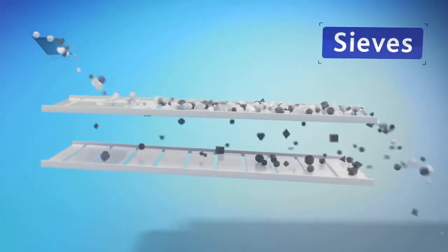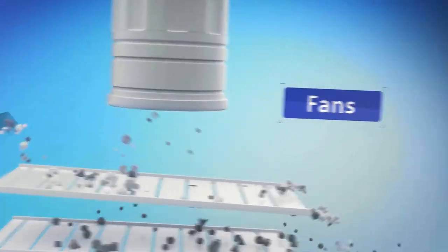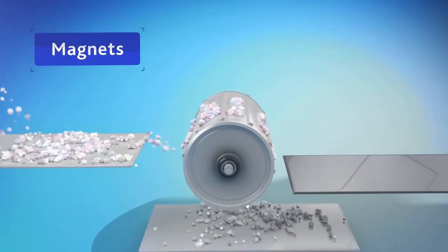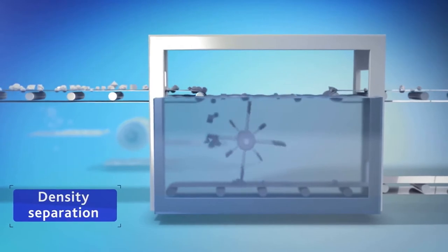Using large sieves, fans, magnets and water baths, light and heavy fractions are separated and plastics are separated from metals.